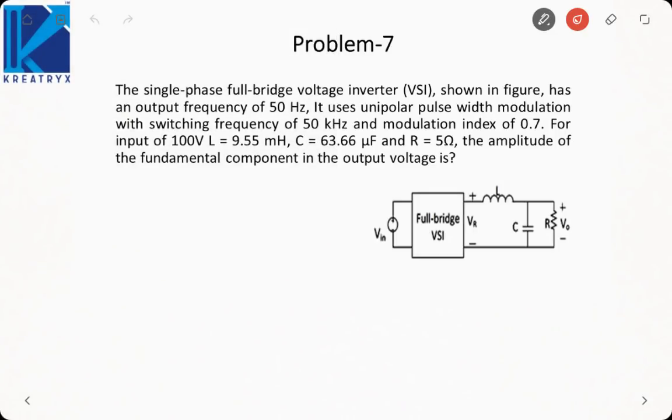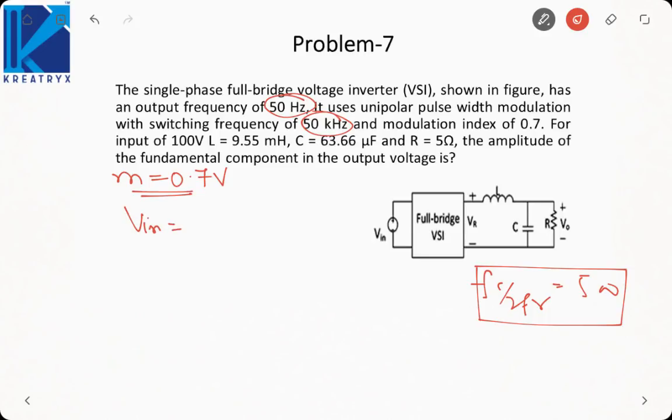In our last problem, it is saying the single phase full bridge inverter VSI shown in the figure has an output frequency of 50 Hertz. It uses unipolar PWM with switching frequency 50 kilohertz. As I told you, even in case of sinusoidal or any other PWM, carrier frequency is much higher as compared to reference. So this is your reference frequency and this 50 kilohertz is the carrier frequency. Now modulation index is given to me as 0.7. Anyways, if I ask you one thing, how many number of pulses will be there? It will be FC by 2 FR. That will come out to be 500. That's why this FC and FR are important. Now we know that the input is 100 volt. We are given the values of component LC and R. We need to find amplitude of fundamental component in the output voltage, that is V0.